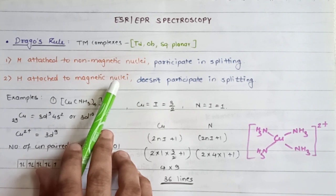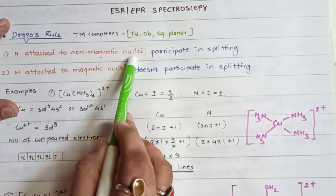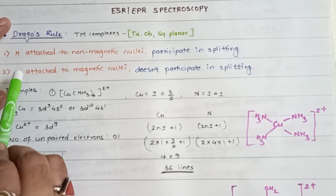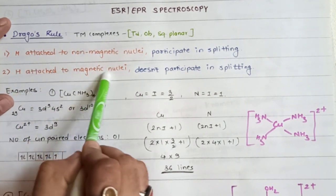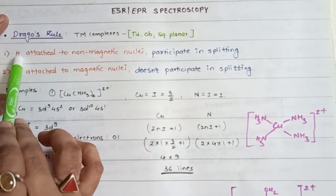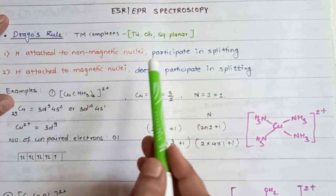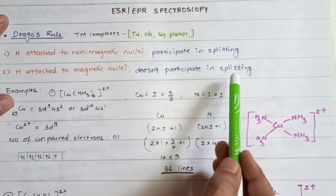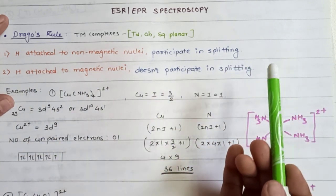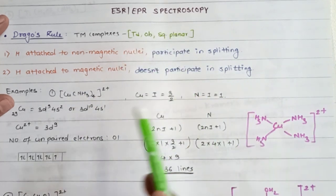The first rule is: hydrogen attached to non-magnetic nuclei participates in splitting. The second key point is: hydrogen attached to magnetic nuclei does not participate in splitting. So you need to identify which nuclei are non-magnetic and which are magnetic to determine whether hydrogen will participate in splitting.